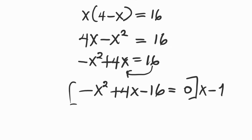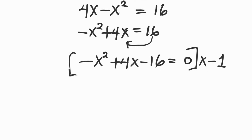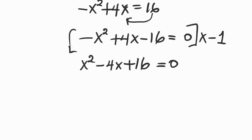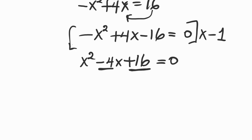Now if we multiply everything on both sides by minus 1, we get x squared minus 4x plus 16 equals 0. We multiply by minus 1 so that our x squared has a positive sign. Now we have a quadratic equation. What two numbers multiply to give positive 16 and add to give negative 4? 4 times 4 is 16, but minus 4 and minus 4 add to give minus 8. 8 times 2 is 16, but minus 8 and minus 2 add to give minus 10. So we cannot factor it easily.